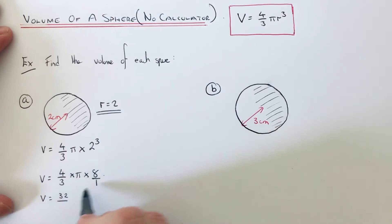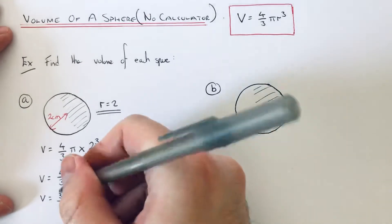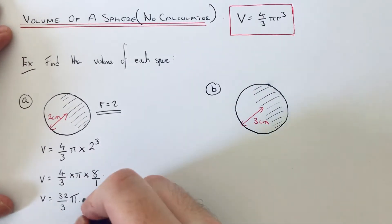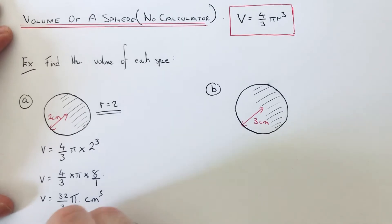And at the bottom we've got 3 × 1, which is 3. Then we just put the pi at the end. Sometimes you might be able to simplify this fraction, but it doesn't, so that's our final answer.